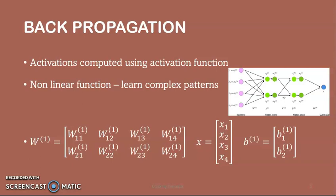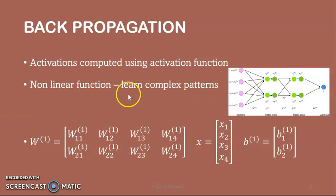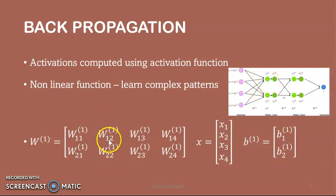Let us pick a layer — let it be layer 2 — and its parameters as an example. The same operation can be repeated on any layer in the network. W^L is a weight matrix of shape N×M, where N is the number of output neurons in the next layer and M is the number of input neurons in the previous layer. For this case, N is 2 and M is 4. Looking into these weights, W_{11} is the weight when the index of the output neuron is 1 and input neuron is 1, and W_{12} is the weight when the output neuron index is 1 and input neuron index is 2. The same is repeated for neuron index 2.